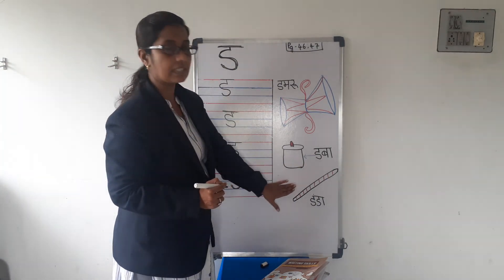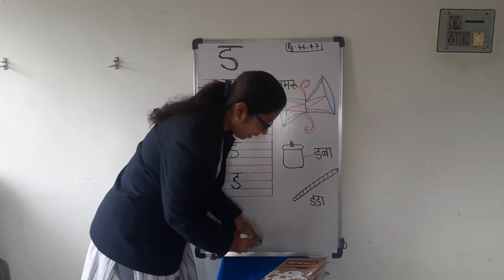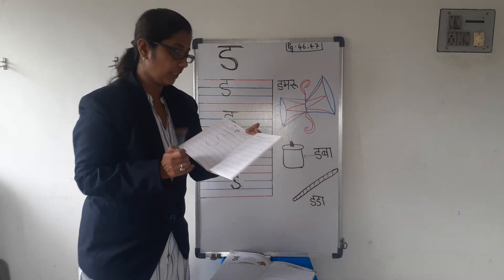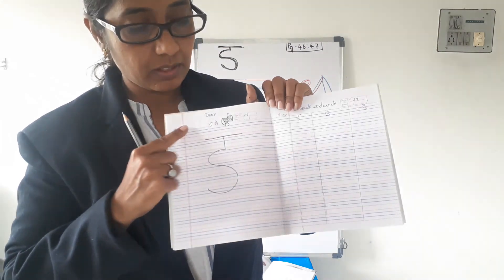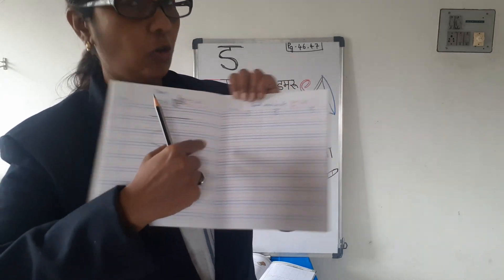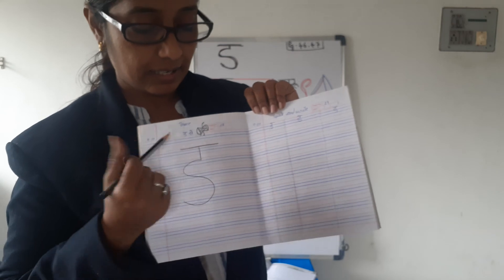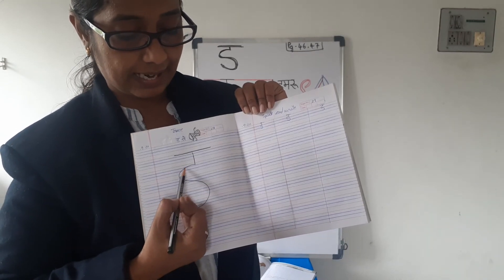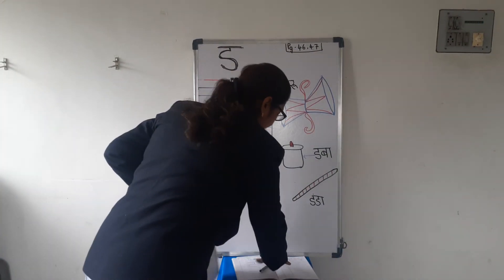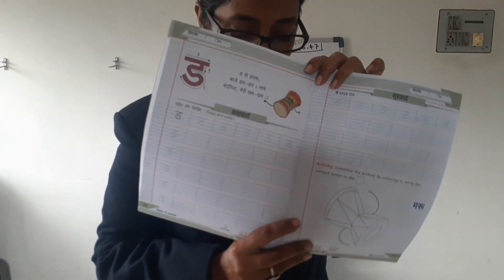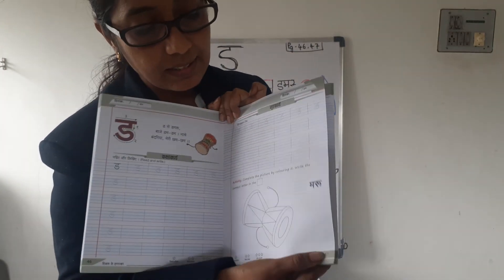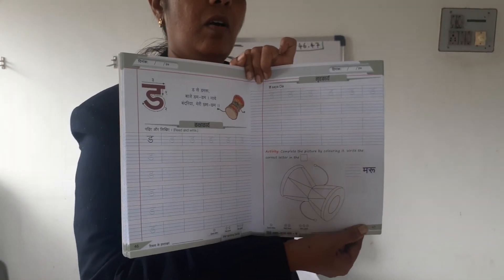Da se dabba. Da se danda hai na? Akko kish mein karna hai? First, you have to trace this notebook. Parents, you have to prepare this page for kids. Da se damru, and then three times slipping line, standing line, and yes. Da se damru. You are having this big book na? This way you can do page number 46 and page number 47. Okay? Bye.